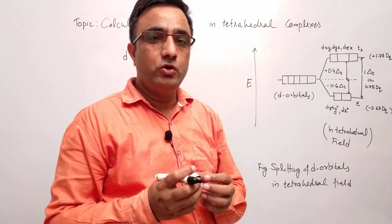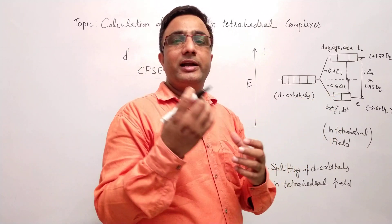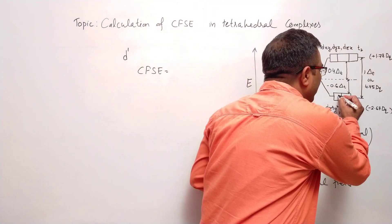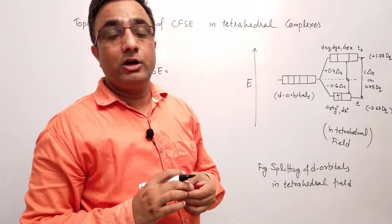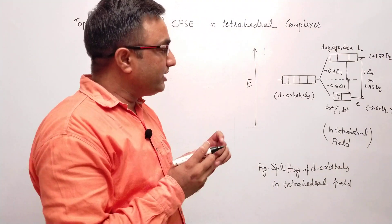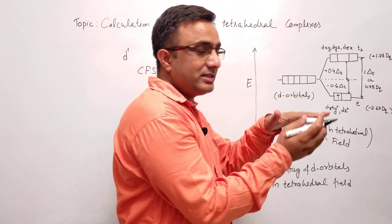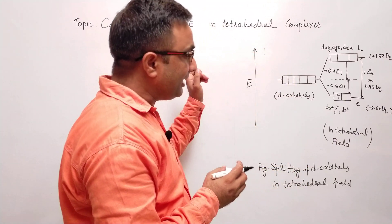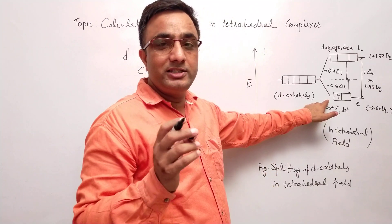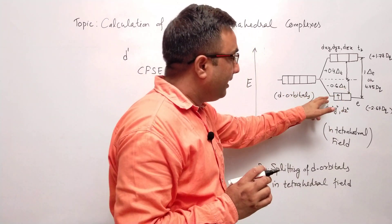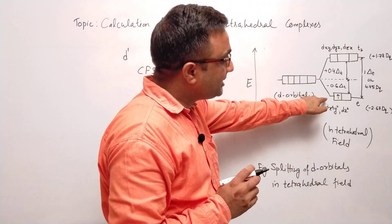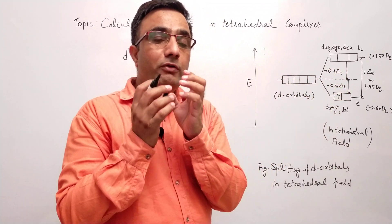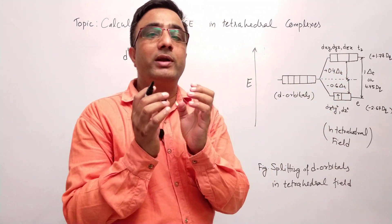In my last video, I discussed crystal field splitting in tetrahedral complexes. If one electron is there, that electron is present in the lower energy level. According to the Aufbau principle, electrons are added based on increasing energy. If one electron is present, it will occupy the lower energy level — that is the E set of orbitals. The stabilization factor for E set of orbitals in the case of tetrahedral complexes is minus 0.6 delta T.